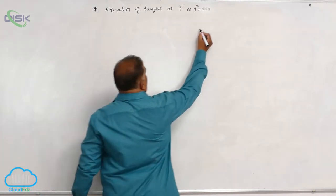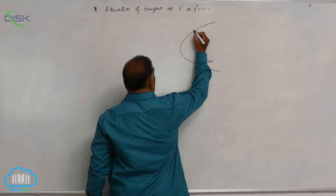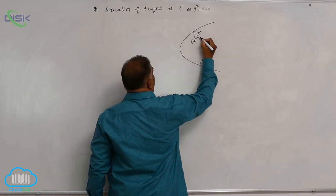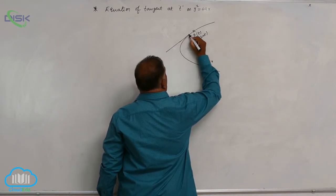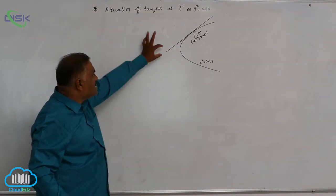So take the parabola y square equal to 4ax. Now, any point P at t, that means it is at square comma 2at. Now let us draw a tangent line at this point. We need to find out this equation.